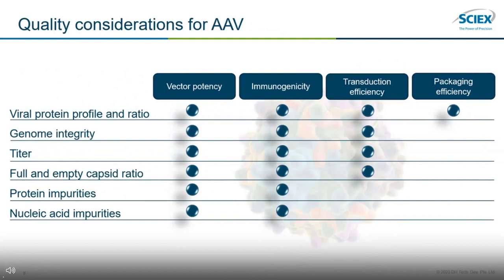Here we see a list of AAV quality considerations and their related impacts to gene therapy drug potency, immunogenicity, transduction efficiency, and packaging efficiency. These quality considerations are often deemed critical quality attributes that must be monitored throughout the AAV-based gene therapy development process to ensure safety and efficacy. For example, the viral protein profile has been shown to indicate vector potency, immunogenicity, transduction efficiency, and packaging efficiency. Genome integrity, AAV titer, and full and empty capsid ratio all influence vector potency, immunogenicity, and transduction efficiency. Additionally, the presence of protein or nucleic acid impurities impacts vector potency and immunogenicity.